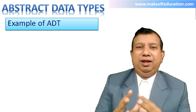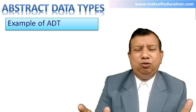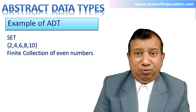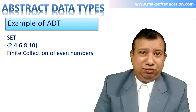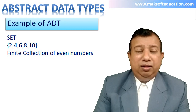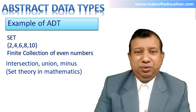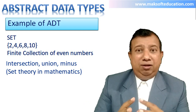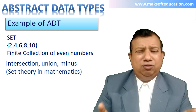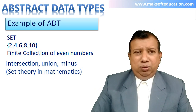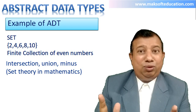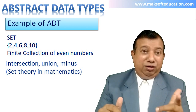Now let us take an example of a non-ready-made data type: set. In mathematics, a set is a collection of some values. For example, {2, 4, 6, 8, 10} is a finite set of even numbers. The possible operations on a set are: intersection — common values in two different sets; union — all values in both sets; and minus, or difference — values available in one set but not in another.